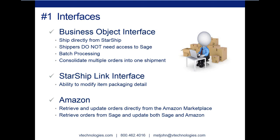Our other interface is the Starship link — our original interface developed with Sage. A new feature for Starship link users is that shippers now have the ability to modify item packaging details. In the past, you would go into Sage's Shipping Data Entry, define your packaging detail there, click the Starship button to pass that information into Starship, and then shippers could not modify it. Now we've changed that — shippers can bring in an order, add packages, and drag and drop items to do the packaging detail.